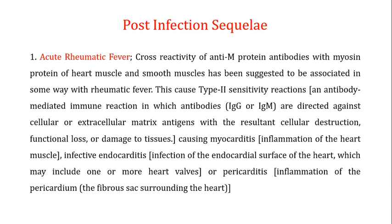The second complication seen in acute rheumatic fever is infective endocarditis, which is the infection of the endocardial surface of the heart, which may include one or more heart walls. Another complication is pericarditis, which is the inflammation of the pericardium — the fibrous sac surrounding the heart. This cross-reactivity of the anti-M protein antibodies is responsible for causing these type 2 sensitivity reactions, which lead to acute rheumatic fever.